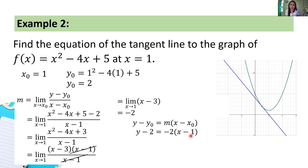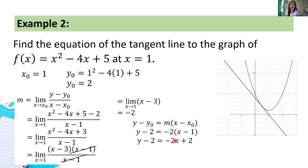Let's simplify: negative 2 times x is negative 2x, negative 2 times negative 1 is positive 2. So we have y minus 2 = negative 2x + 2. Next, for the general form — the aim is to make the right-hand side equal 0 — so we add 2x to both sides and subtract 2 from both sides.